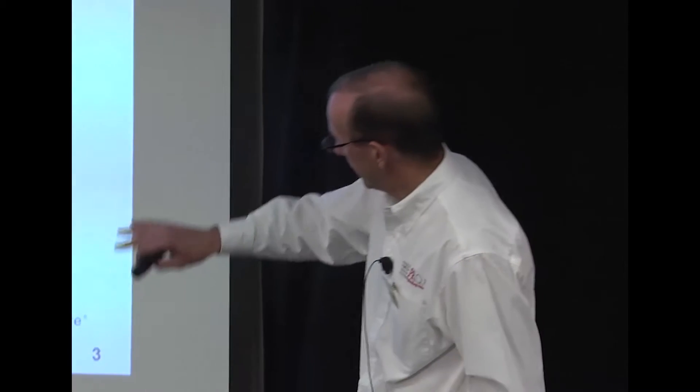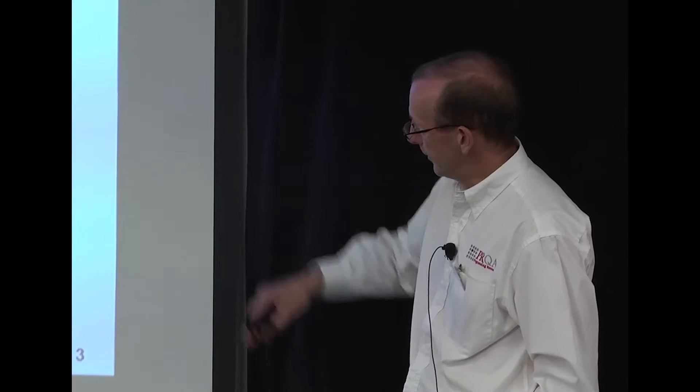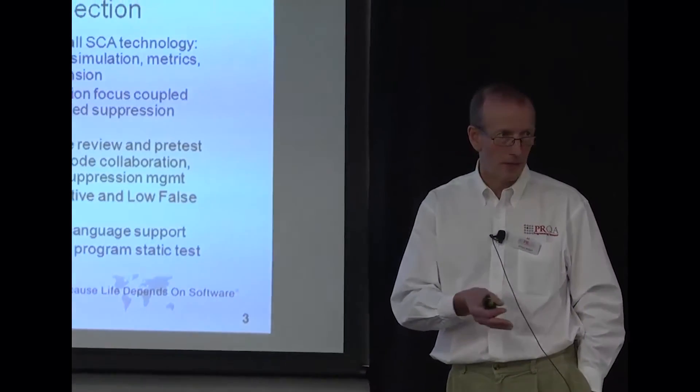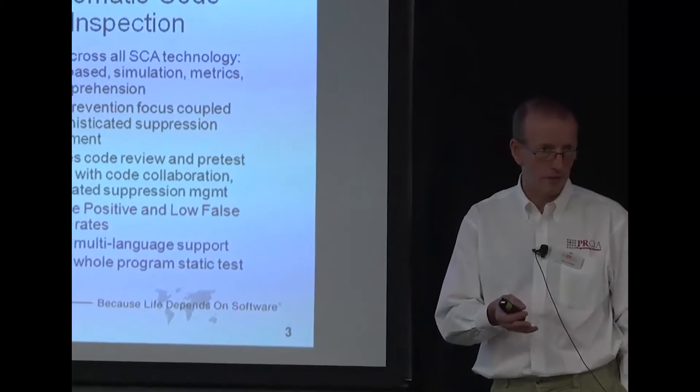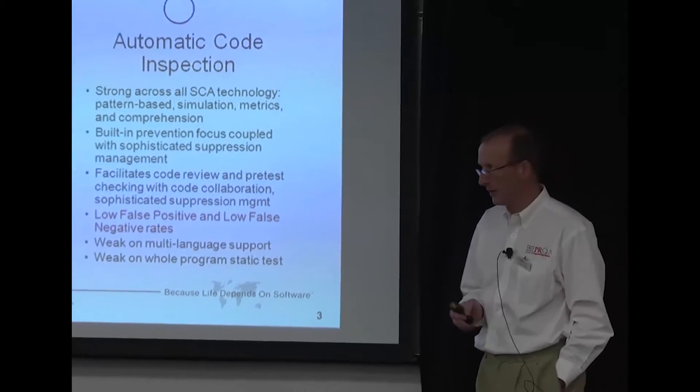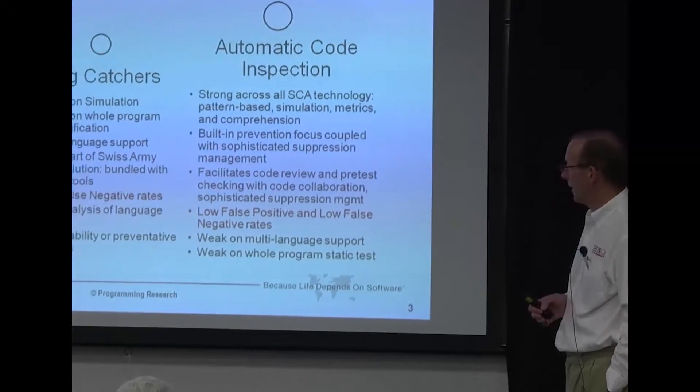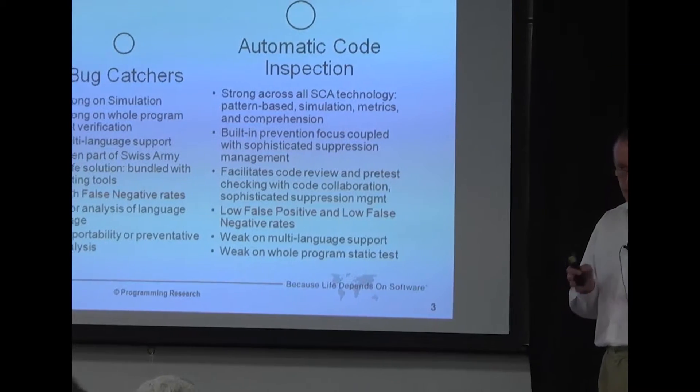When you look at the different types of tools that exist out there, it follows a pattern. There's an arrow in the background somewhere. It starts with the very basic lint type tools, and how they address in a very light way some of the syntax and semantics of code, but not in a very thorough fashion.